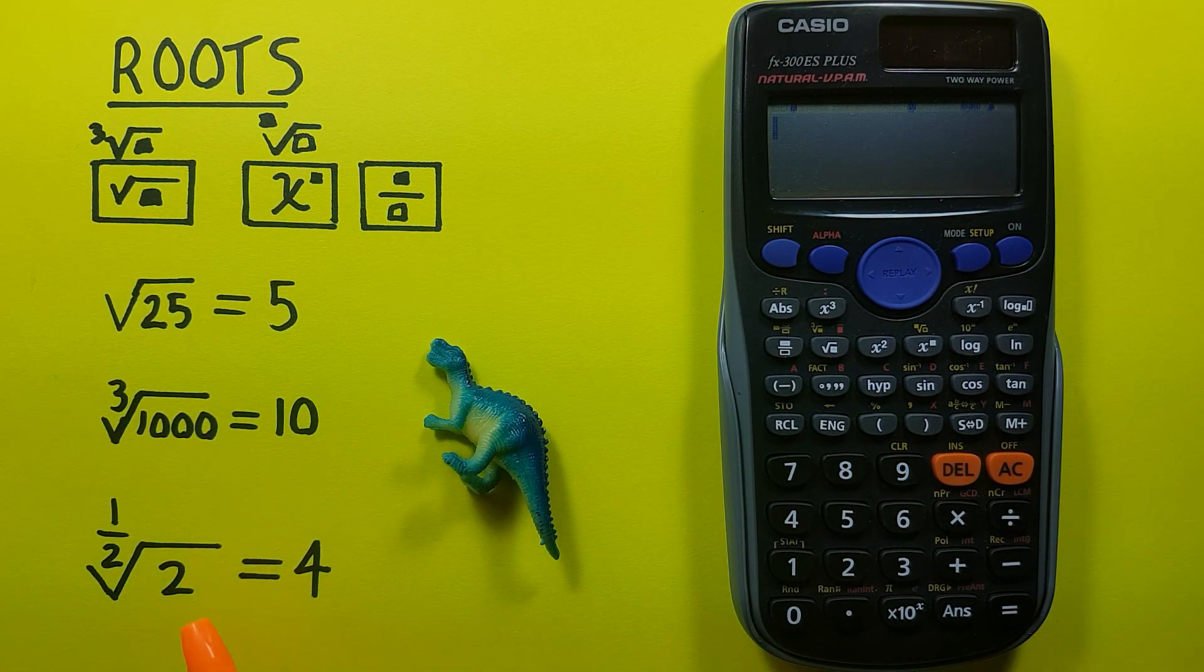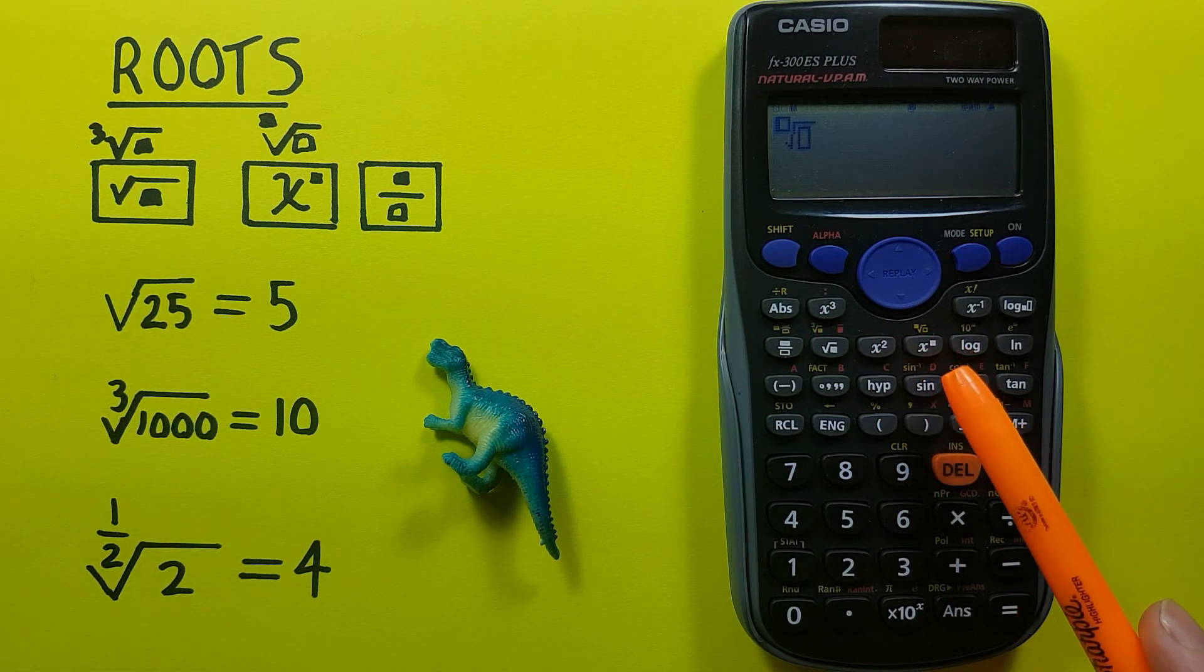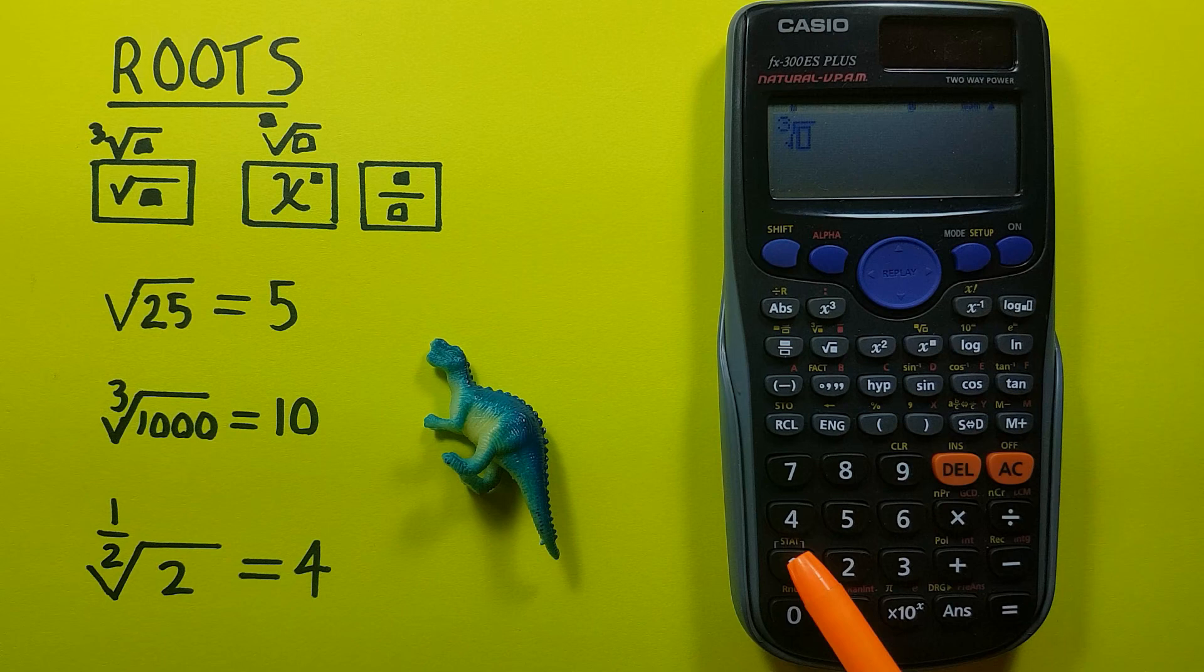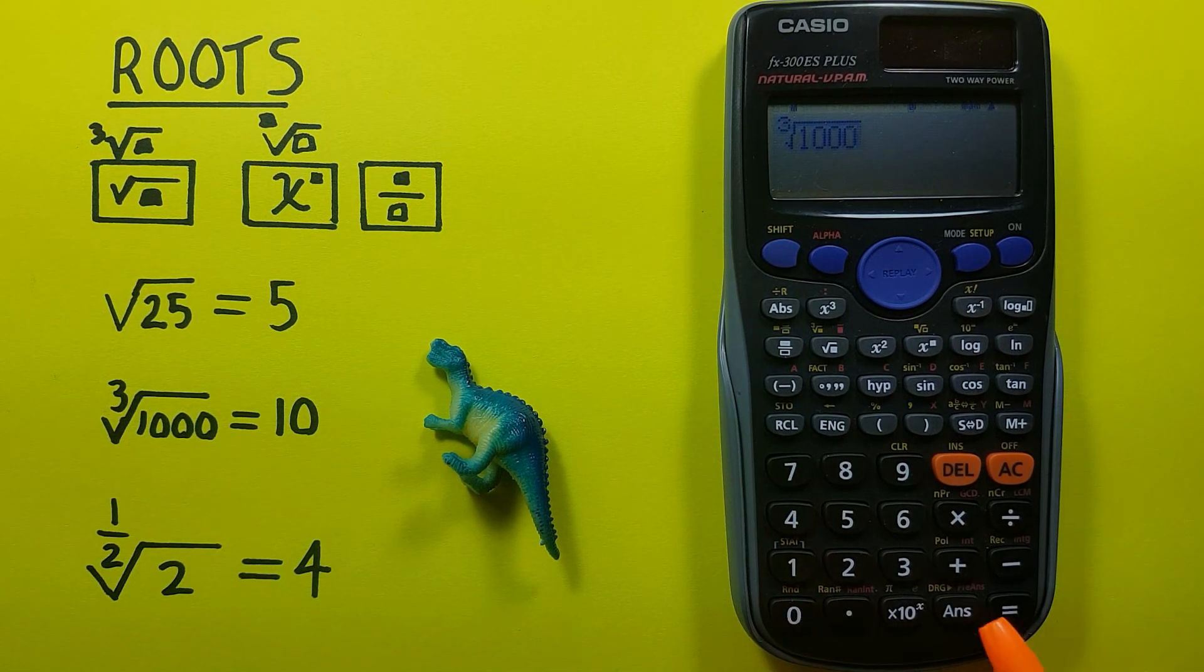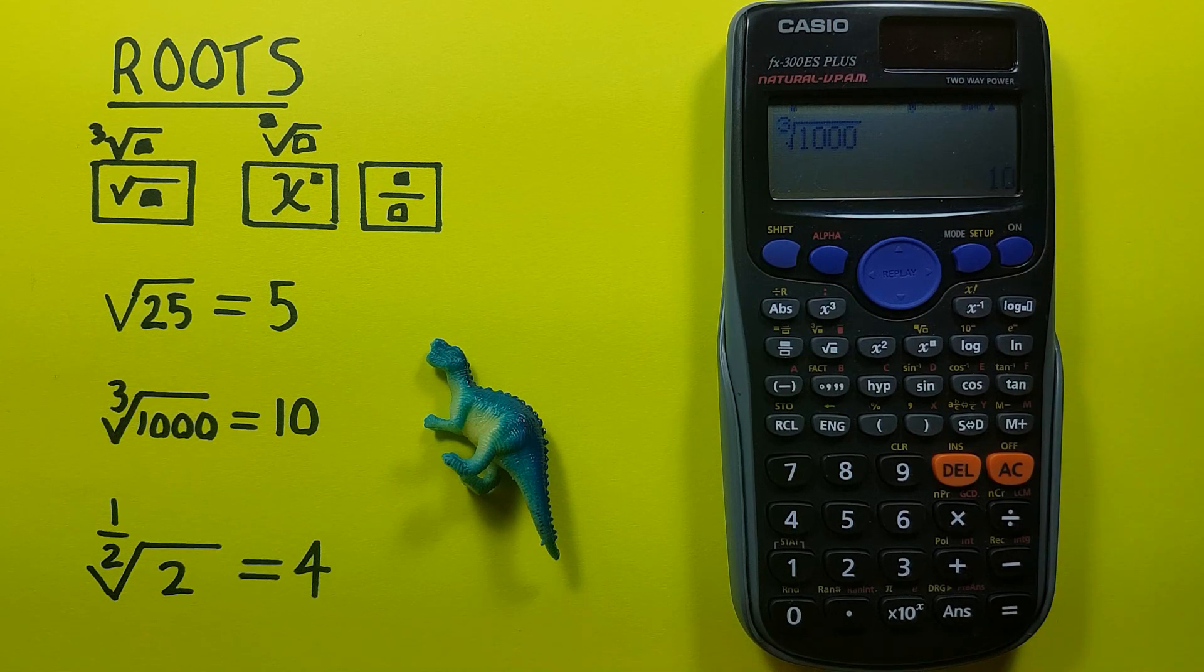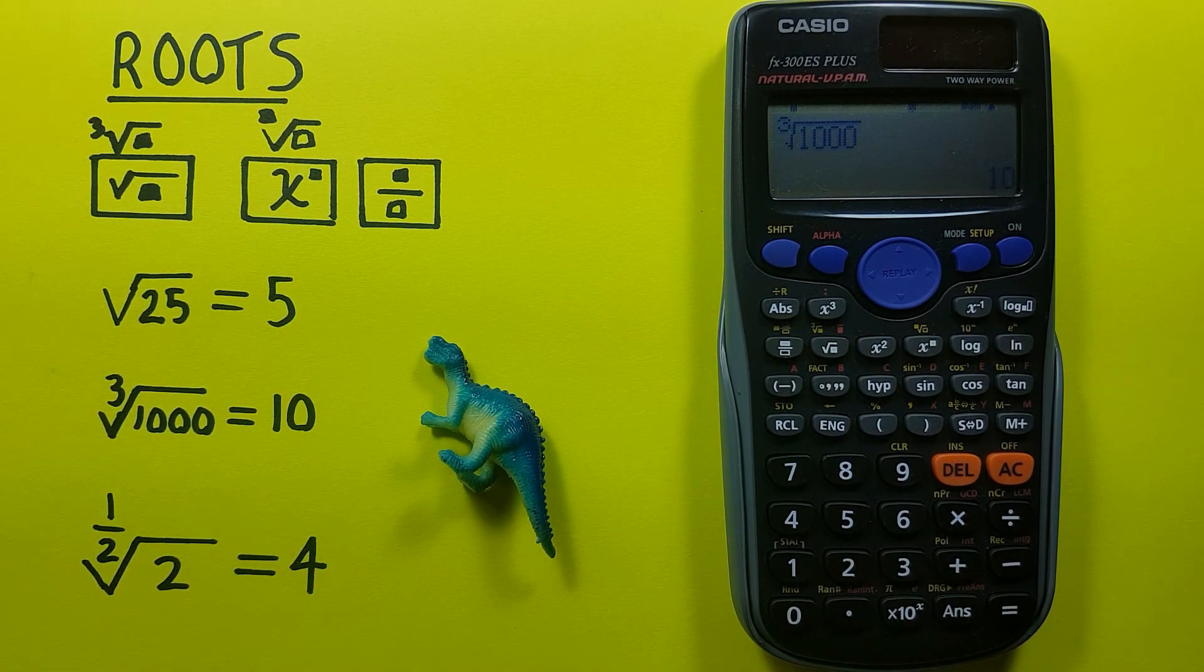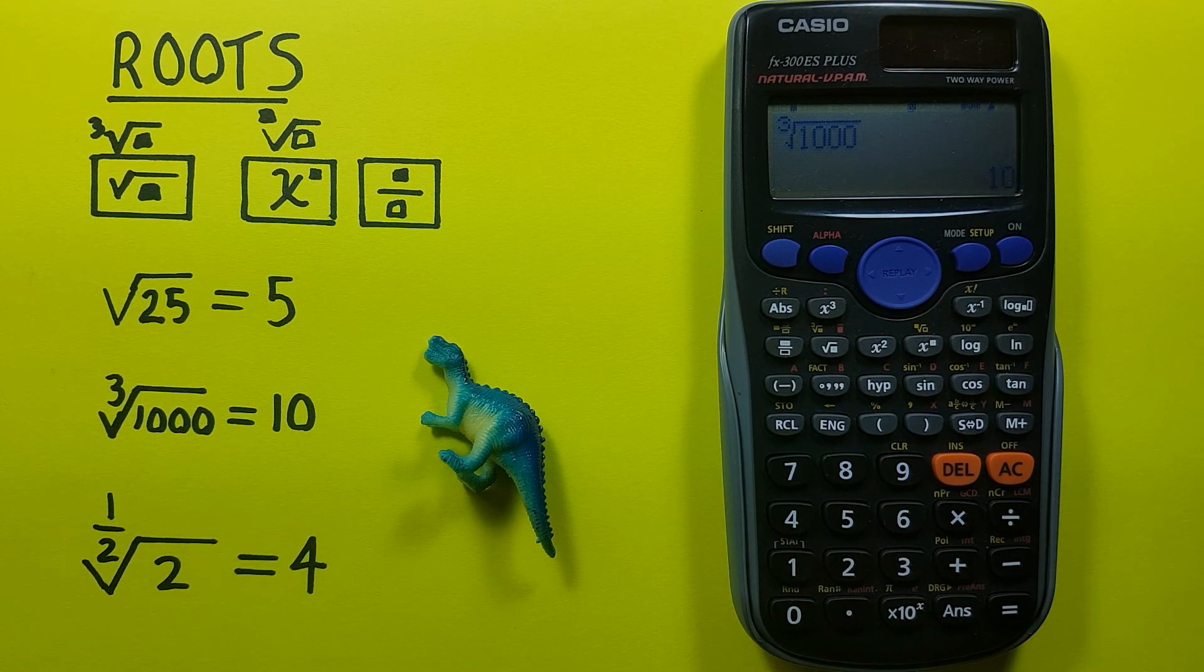We can also test this by comparing it to our previous answers. So say if we wanted to find the cube root of 1000, if we go shift root key and enter the 3 on top there and the 1000 below just like before, and press equals, we get 10 just like we did before, so we know that works.